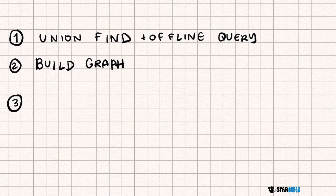For the Gold part of this question, we can't actually simulate literally removing every node one by one, because if we did that we would have to do N DFS's, which would obviously go over the time limit. So what we're going to do instead is use Union-Find.